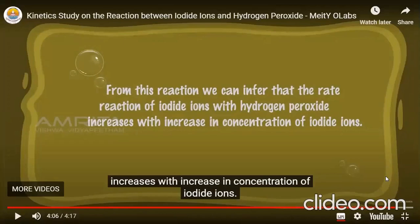We maintain: sulfuric acid at 10 ml constant, starch at 5 ml constant, sodium thiosulphate at 10 ml constant, and hydrogen peroxide at 5 ml constant. As we change only the volume of potassium iodide, the rate of reaction changes — the time for the appearance of blue color changes accordingly.